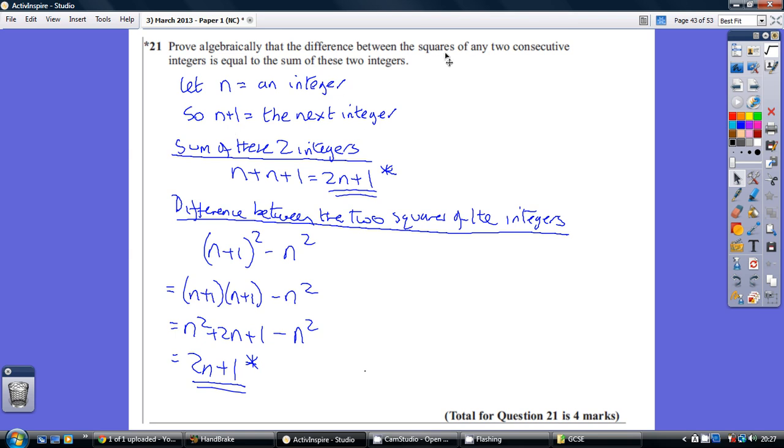So we've got to prove two things are equal. So let's look at them one at a time. Let's start off with the second bit because that's a bit easier. So we've got to show something is equal to the sum of these two integers. So obviously the sum of these two is just them added together. So that's n plus n plus 1, which is 2n plus 1.